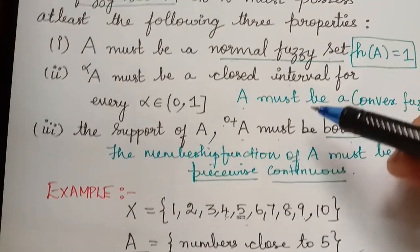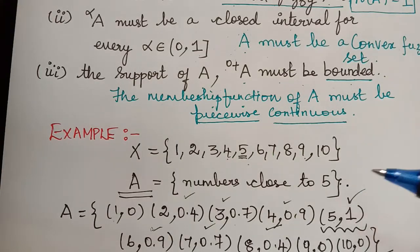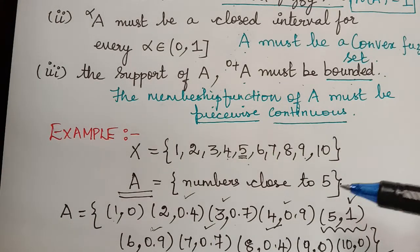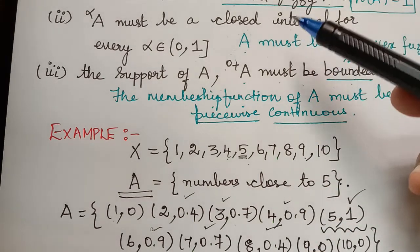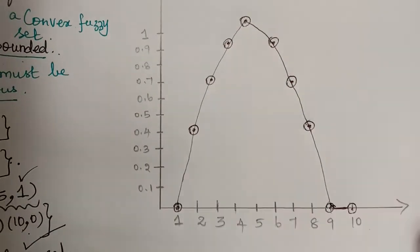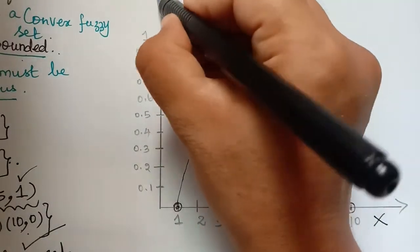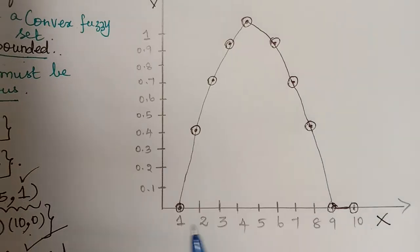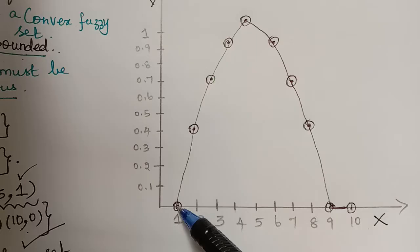Since all three conditions are satisfied, the given fuzzy set is a fuzzy number. We can also understand this with the help of a graph. Here I have drawn the fuzzy graph where the universal set is taken along the x-axis and the membership grades are taken along the y-axis. I have plotted the points and drawn the graph.